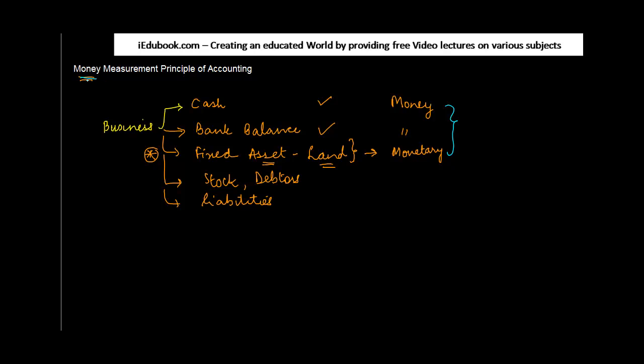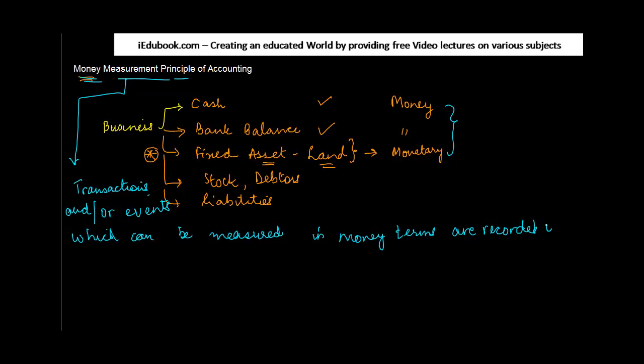Now coming back to what a money measurement principle means. Money measurement principle means that only transactions and or events which can be measured in money terms are recorded in books of accounts.